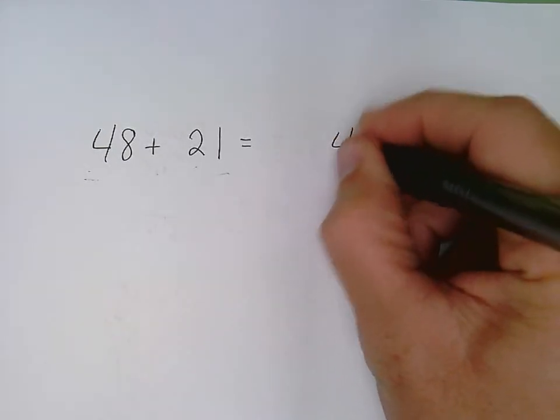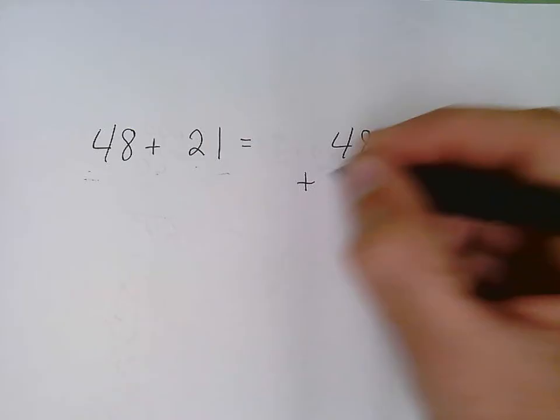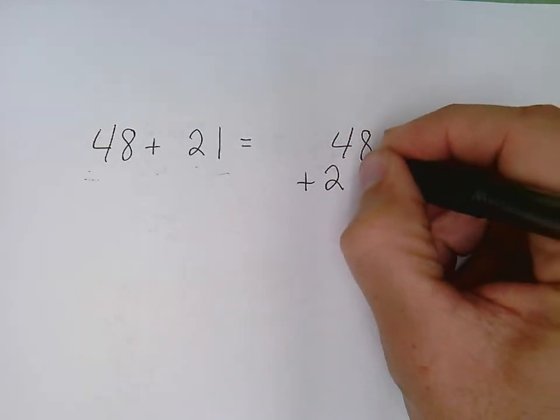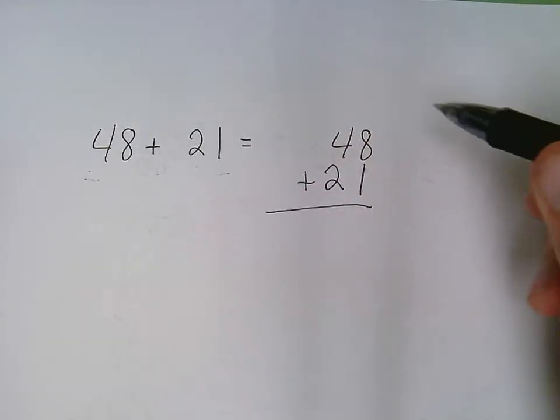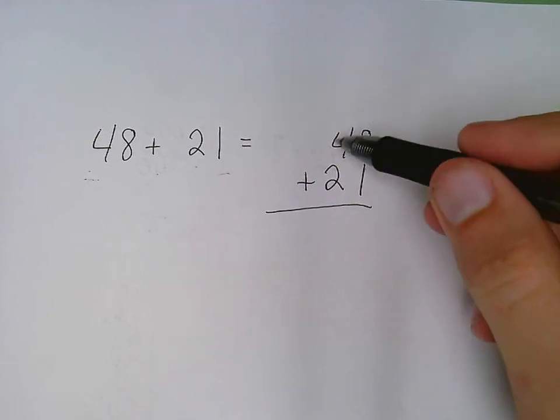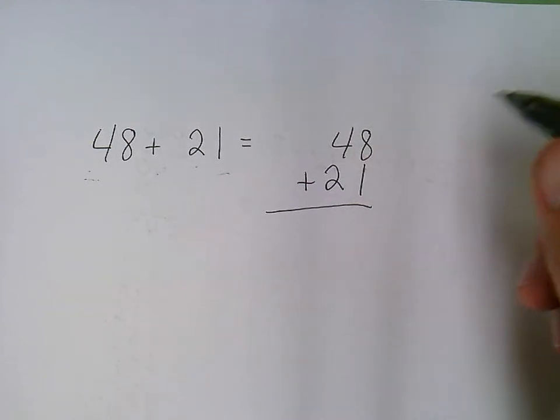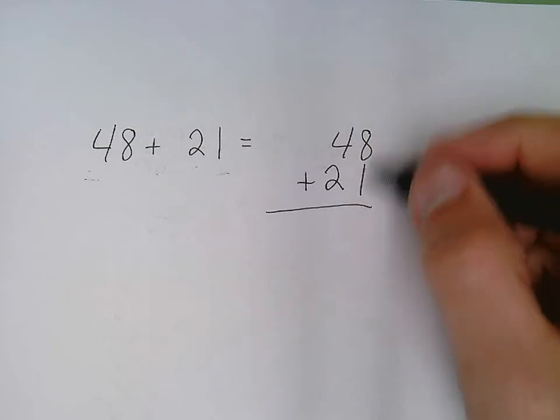So I put 48 plus 21. I make sure that my place values are lined up, my ones with the ones and tens with the tens, and I start adding in the ones column.